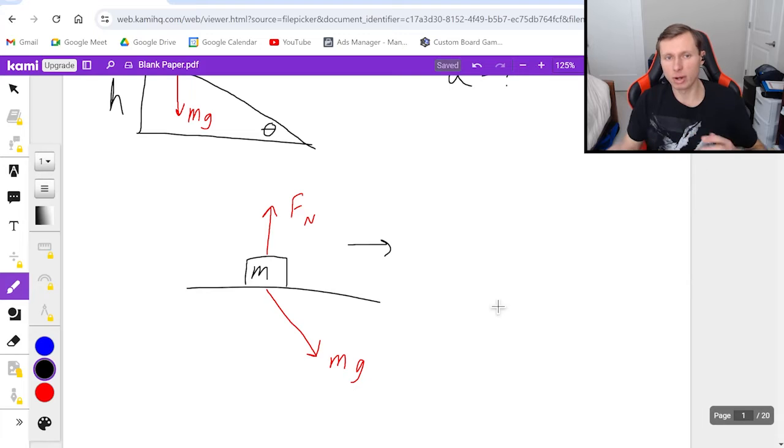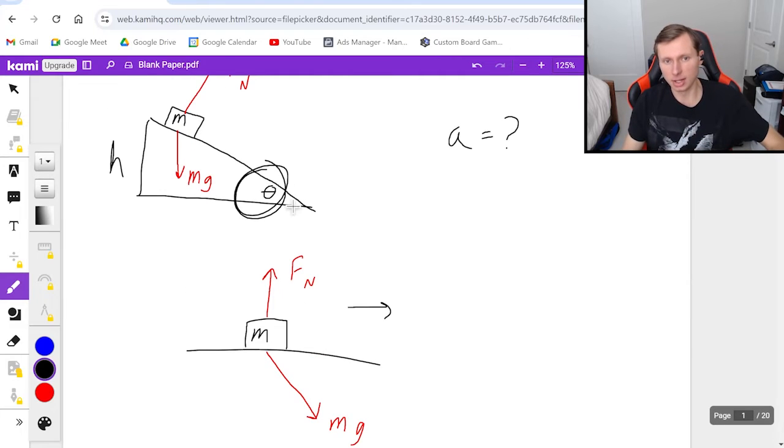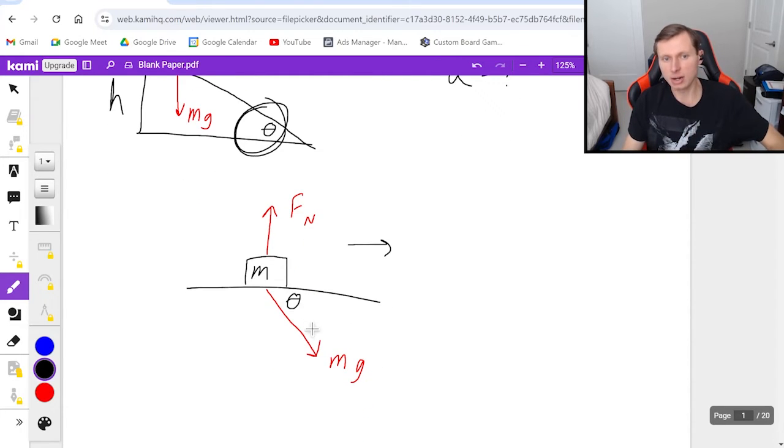The one thing we need to still figure out is where does that angle theta go, and if you were thinking it goes right here I would say of course and also you're wrong sorry. The actual angle always goes in between mg and the imaginary vertical line going down the center. That's where theta goes. I could prove it using geometry or you can just take my word for it which is what I would recommend doing if I were you.